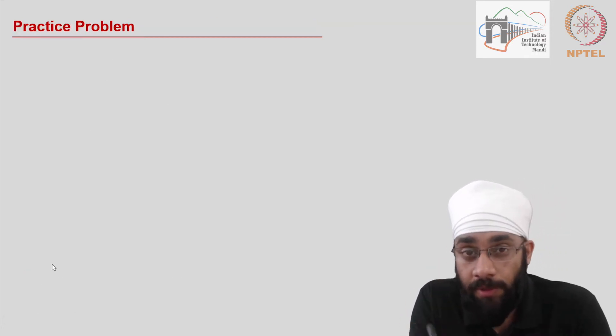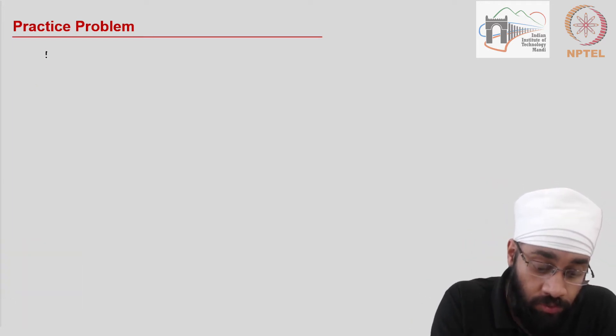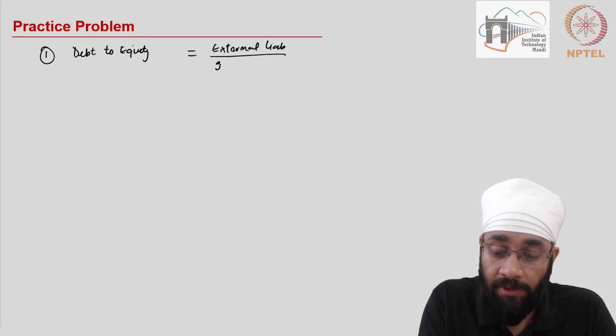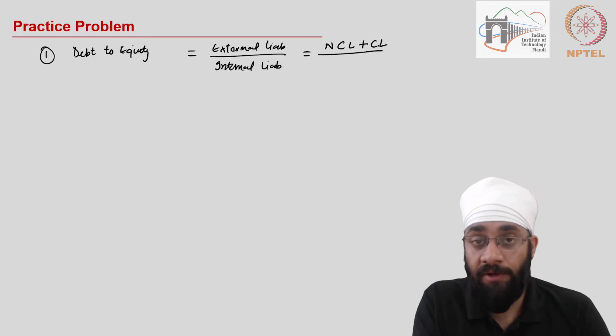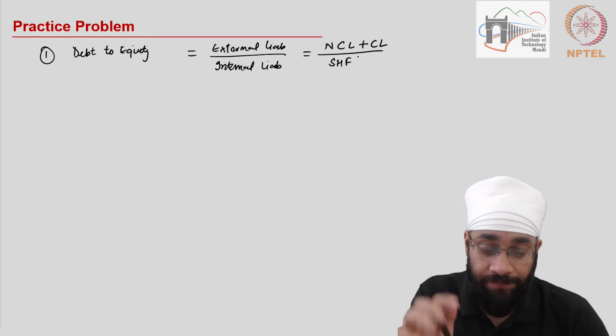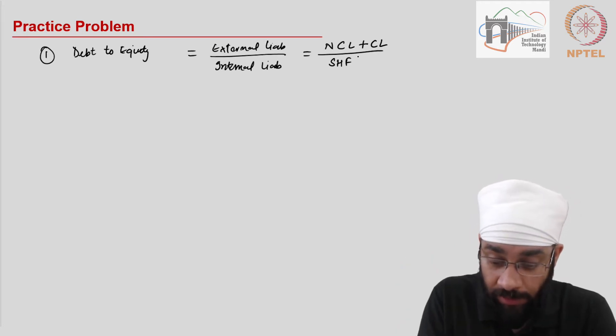Solvency position is the long-term financial position. The first indicator that we are going to use is debt to equity ratio, and this is equal to external liabilities divided by internal liabilities. The external liabilities include both the non-current liabilities and the current liabilities, and the internal liabilities refer to shareholders funds. Let's figure that out, so we need the external liabilities first.